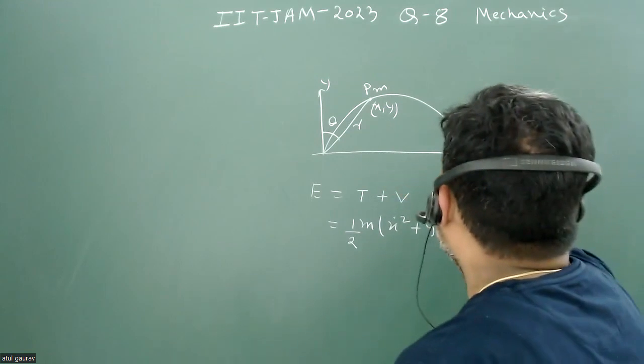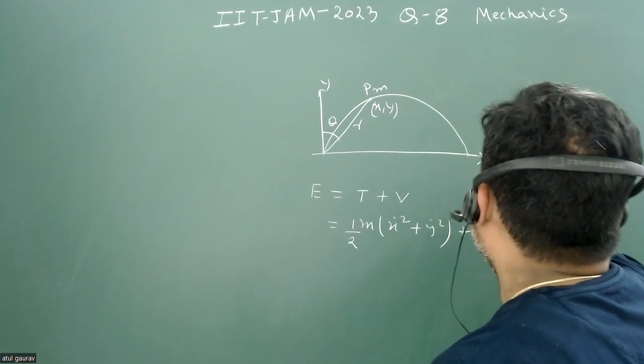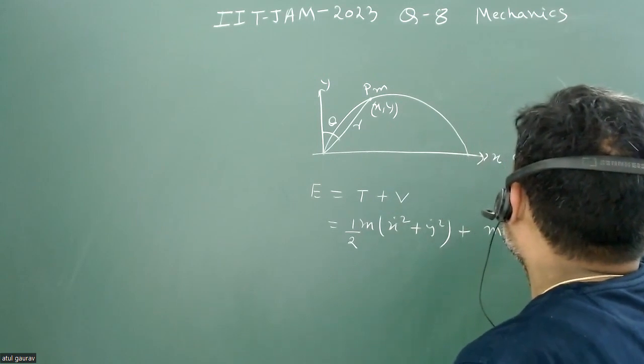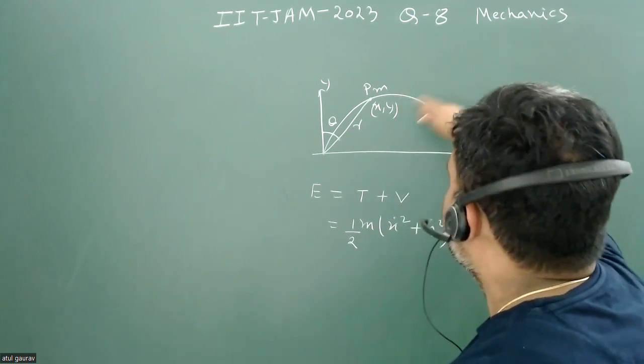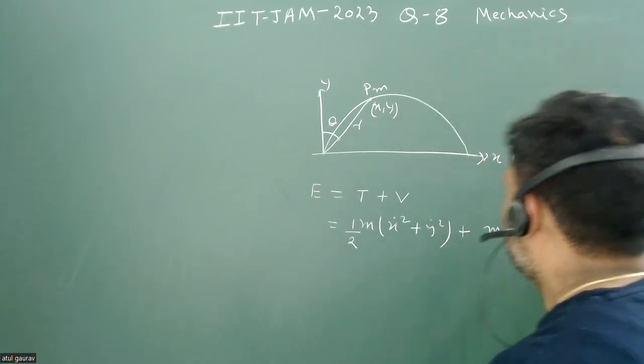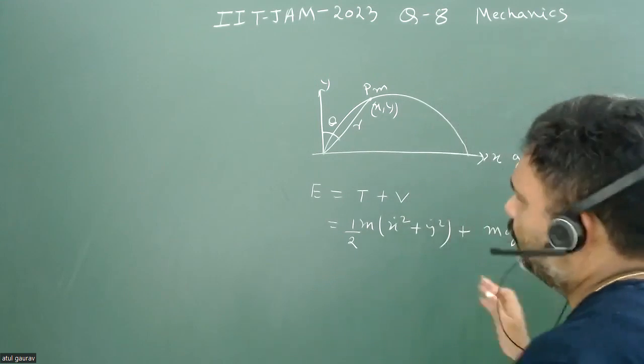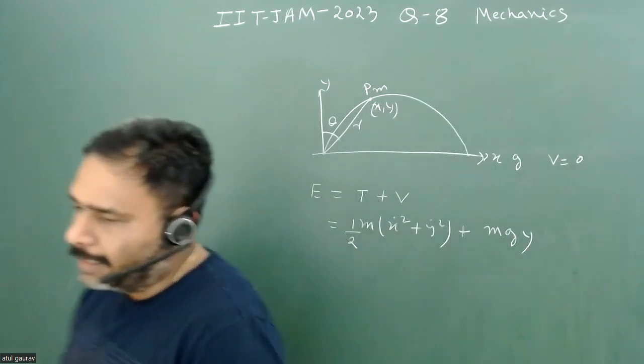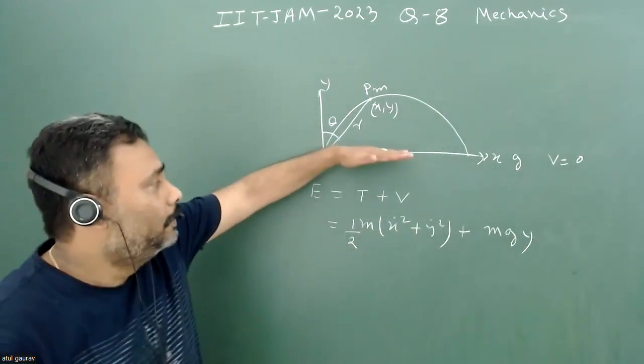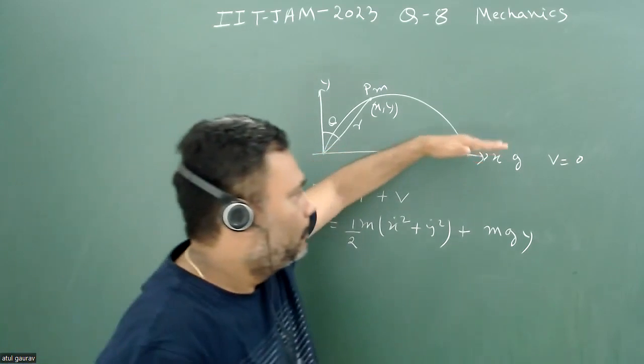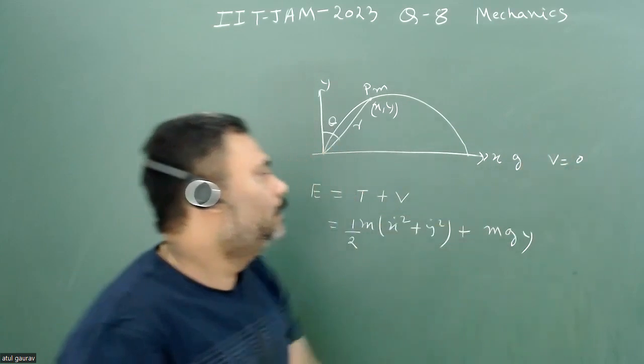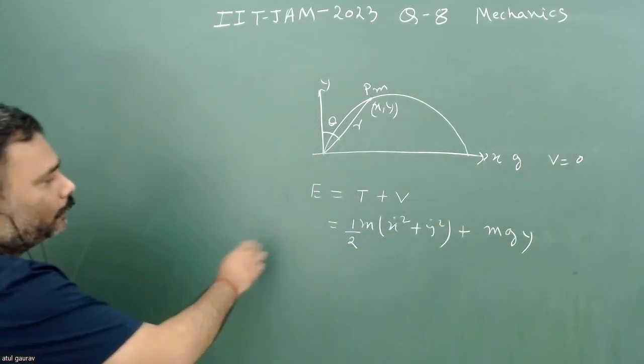The potential energy will be plus MgY. Why? Because it is given that on the ground we have potential energy zero. So whatever will be the potential energy above the ground and this side, we will take as a positive sign. So this will be my MgY. If this is my reference of the potential and at the ground the potential energy is zero.